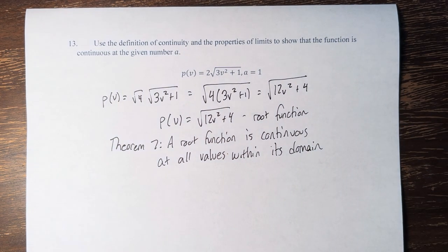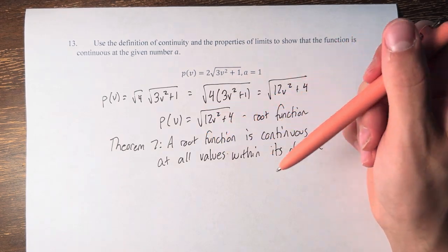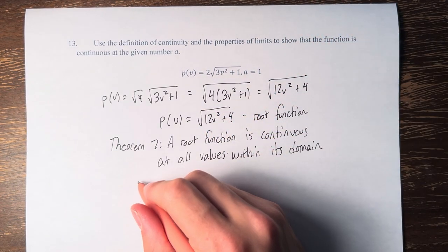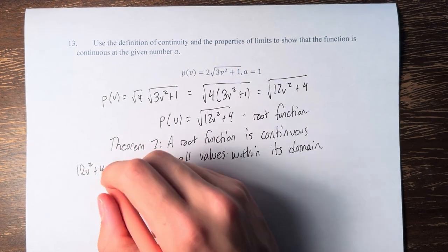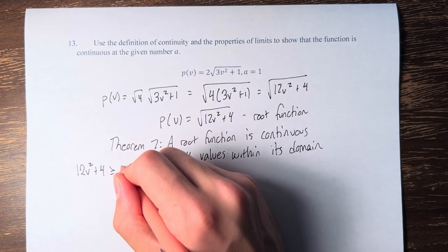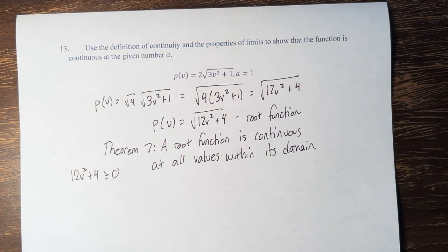What is the domain of this function? Well, the only restriction on the domain is that we cannot be taking the square root of a negative number. Therefore, we can say that 12v squared plus 4 must be greater than or equal to 0.